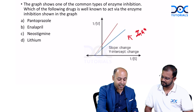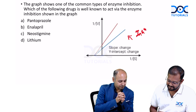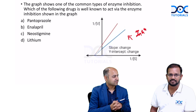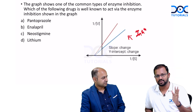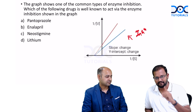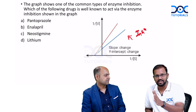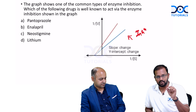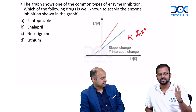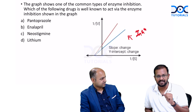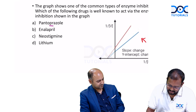Now I'll hand over to Dr. Nilesh Raj, who will discuss the drugs in the options and identify which type of inhibition each follows. So guys, as sir has clearly explained, this is essentially a comparison between the three major inhibitions: competitive, non-competitive, and uncompetitive. The question gives a graph and asks which drug matches it. Let's look at each drug individually — starting with pantoprazole.